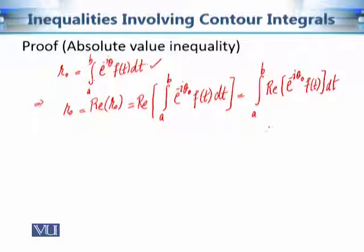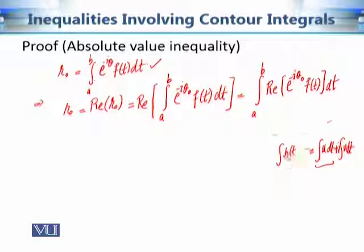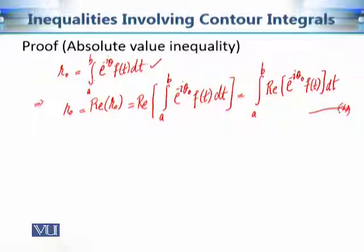To recall why this happens: since f(t) = u(t) + i·v(t), if we integrate h(t) dt then this equals the integral of u dt plus i times the integral of v dt. So the real part of this integral is equal to the integral of the real part. That is the fact we use, let us call it double star, and let us move on with our proof.